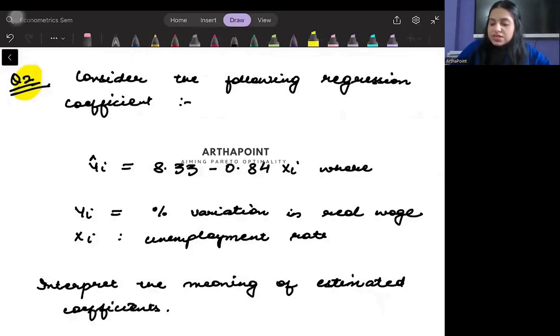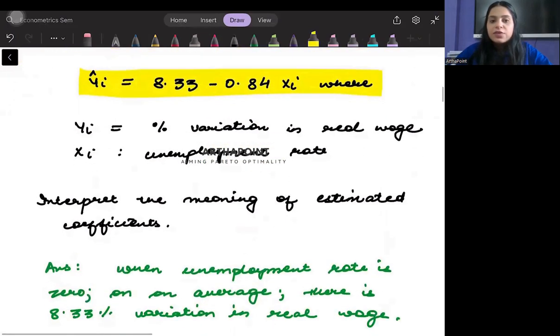Let's look into question number 2. It says consider the following regression coefficients. You are given yi hat equals 8.33 minus 0.84 xi, and you are given that yi is percentage variation in the real wage and xi is unemployment rate.